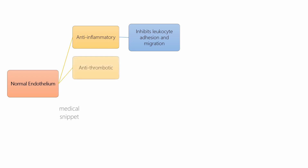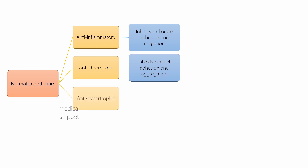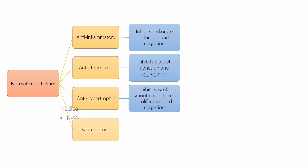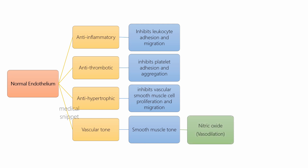In normal state, endothelium is anti-inflammatory, that is it inhibits leukocyte adhesion and migration. It is antithrombotic, that is it inhibits platelet adhesion and aggregation. It is antihypertrophic, that is it inhibits vascular smooth muscle cell proliferation and migration. It regulates vascular tone by regulating tunica media smooth muscle cell tone, mediated by endothelium-derived nitric oxide, which causes smooth muscle relaxation and thus vasodilation.